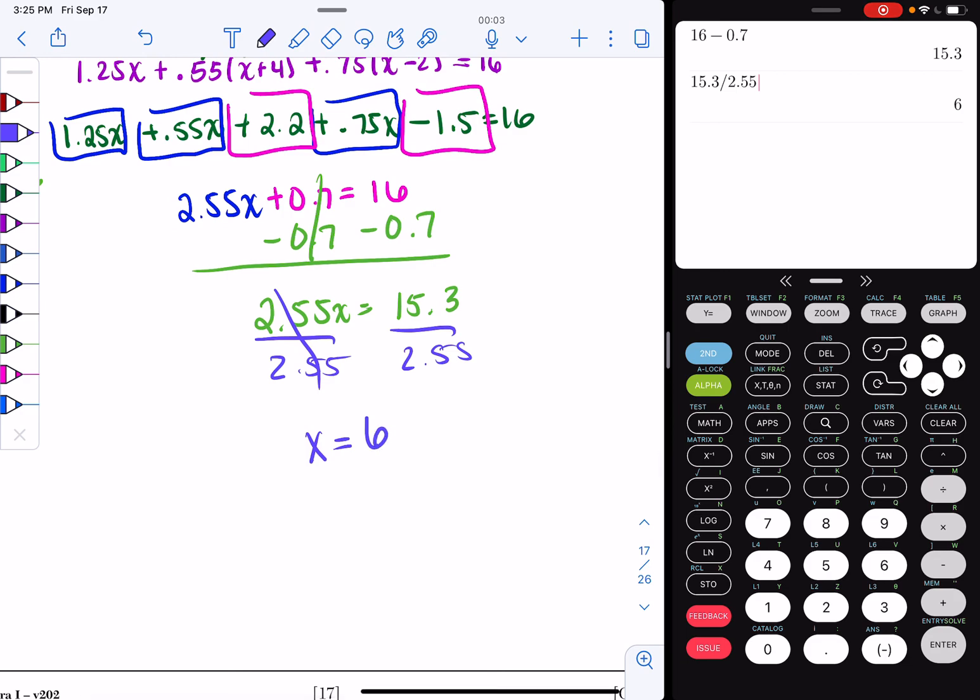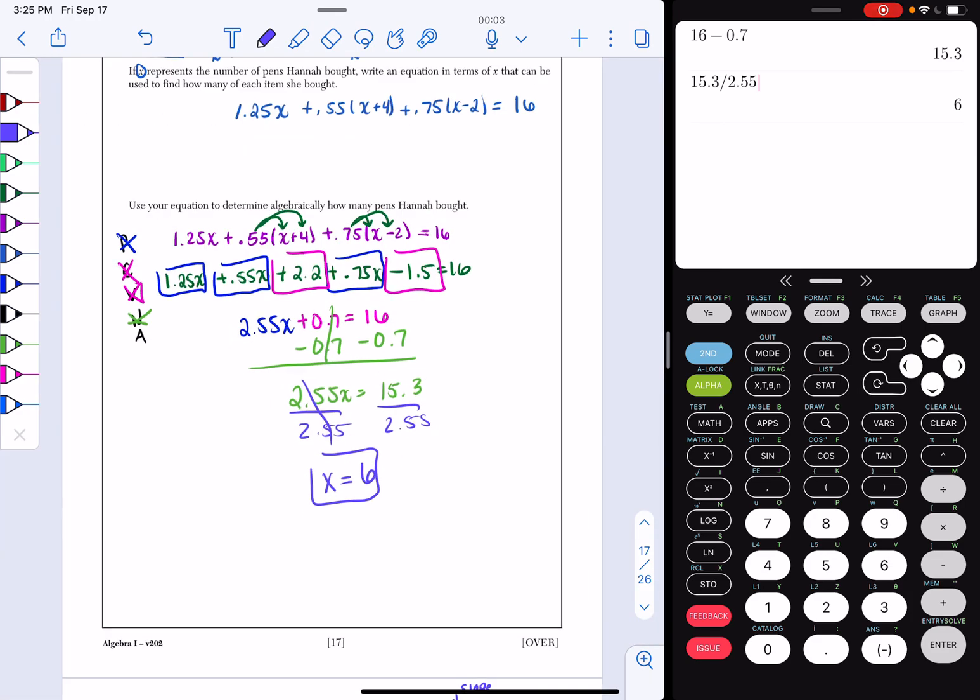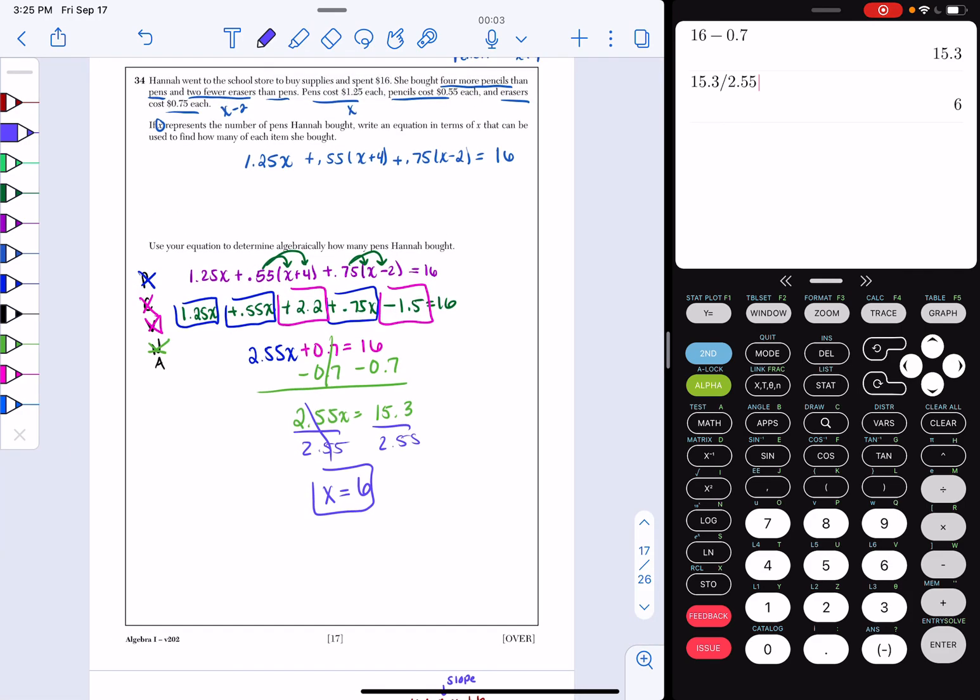So I bought six pens. That's it. You bought six pens. All that work for this. And that's your final answer. And that's how you solve question number 34.